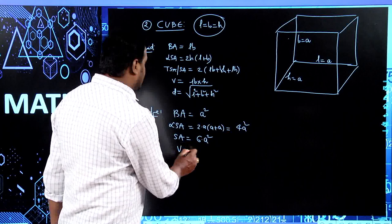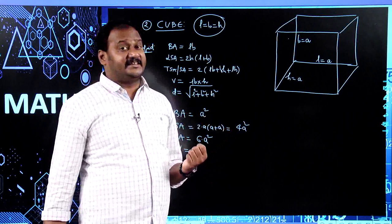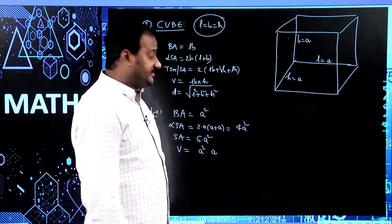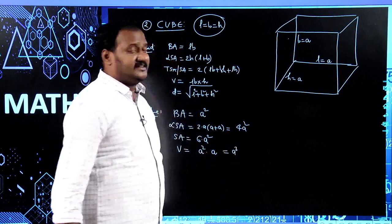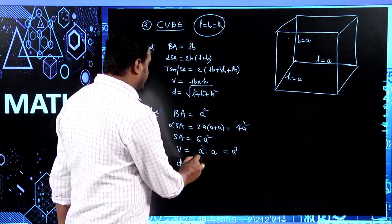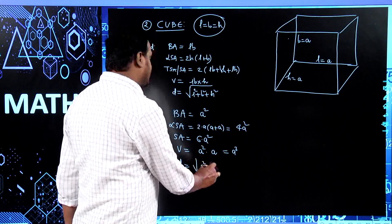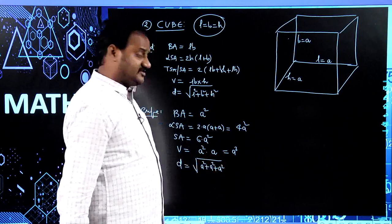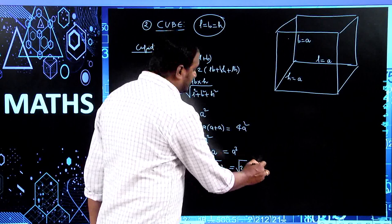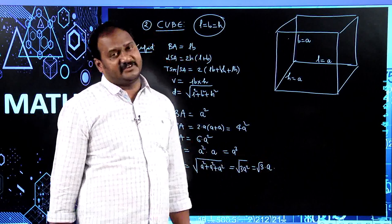Coming to volume: since a cube has uniform thickness, volume equals base area multiplied by height. Base area equals a², and height equals a, so a² × a = a³ is the formula for volume of a cube. For the diagonal: using √(L² + B² + H²) = √(a² + a² + a²) = √(3a²) = √3 times the edge — that is the diagonal of a cube.